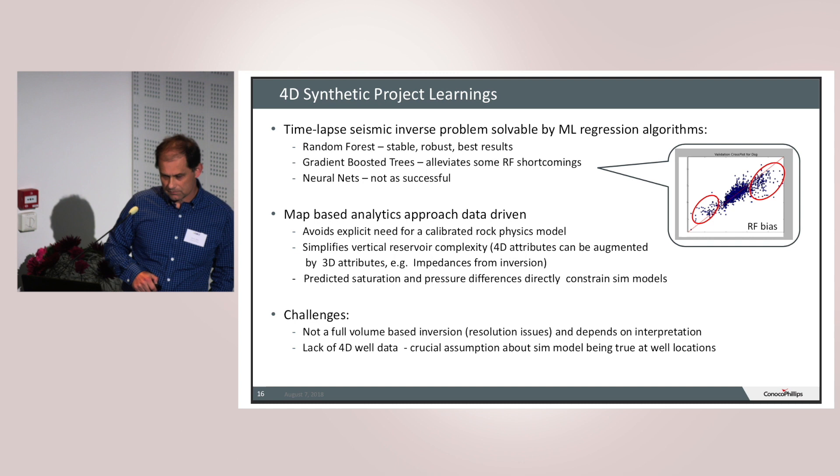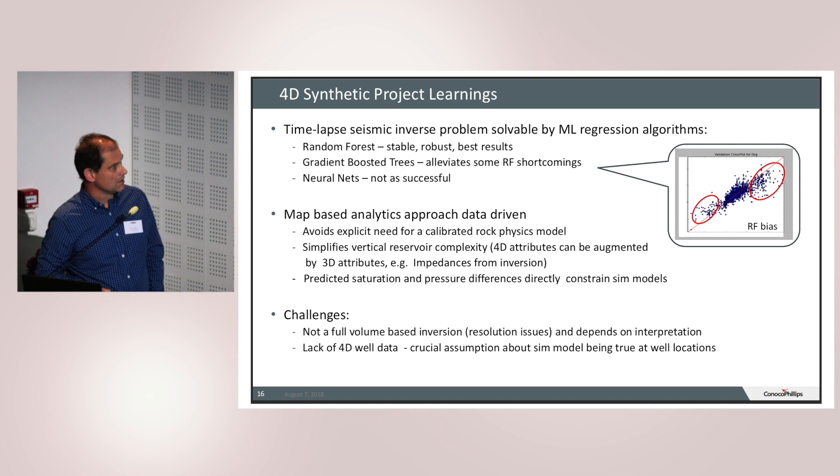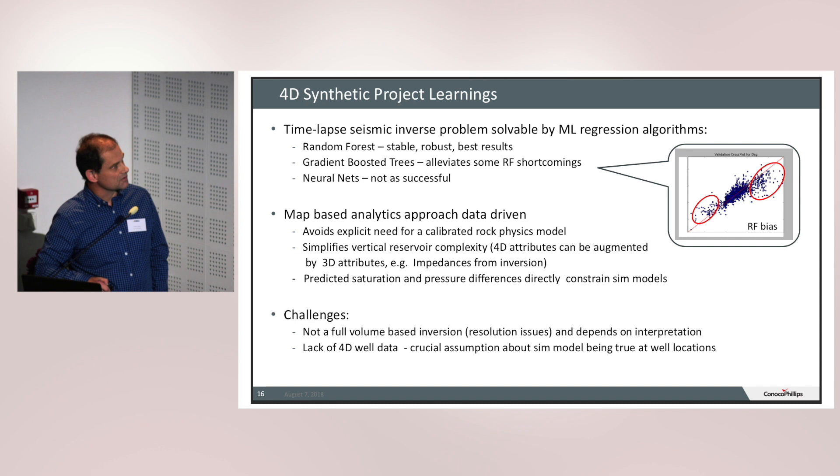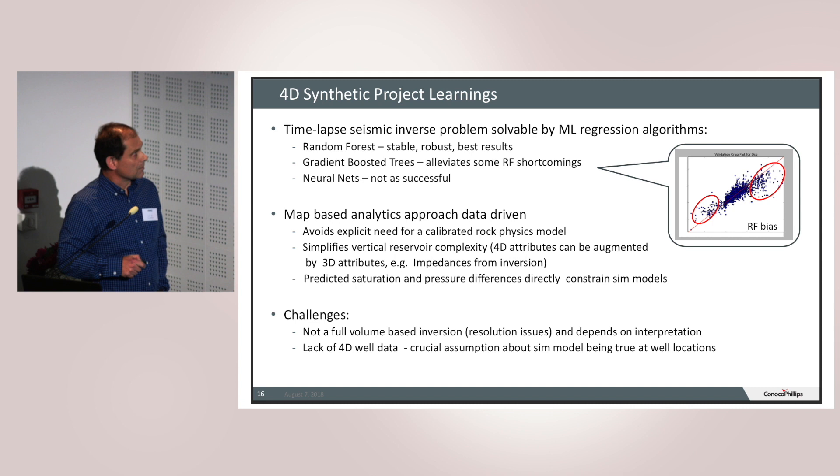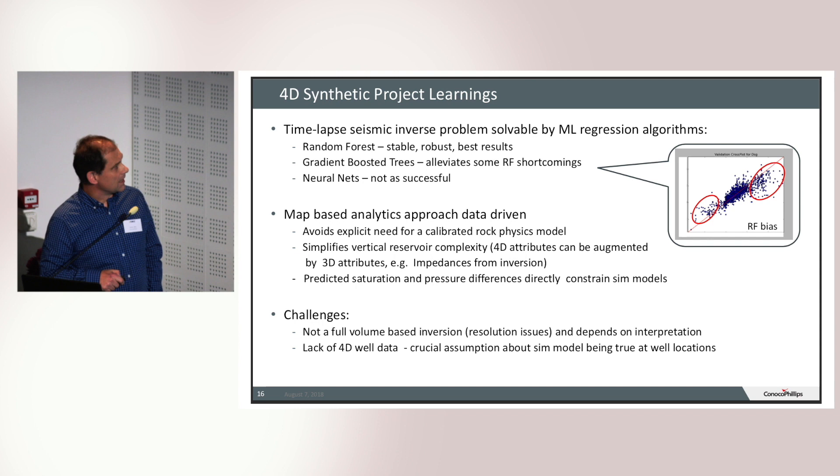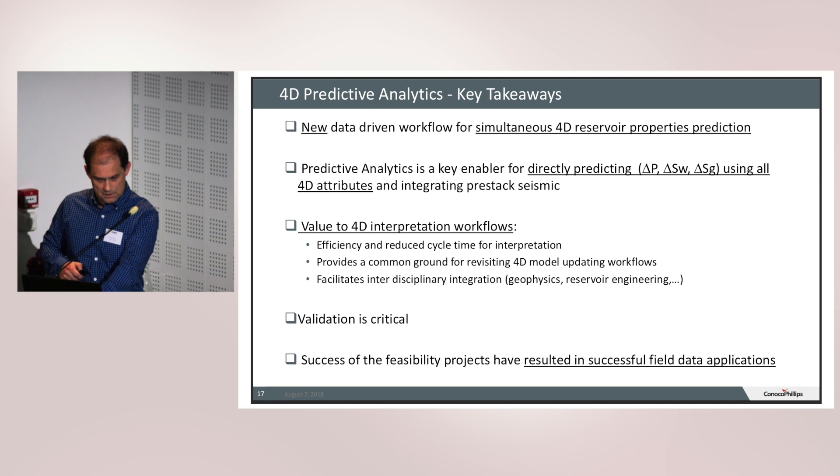What were the learnings? We tested several algorithms. Random forest was the most stable, even though systematically we were observing issues with over-predicting on the lower end and under-predicting on the higher end, which introduced a bias. Those are the regions where you are most interested in the changes, the biggest and the smallest changes. But some of the issues can be alleviated by adopting gradient-boosted trees, for instance. The benefit is that we totally avoid the rock physics inverse transform. There is no rock physics calibration in this approach. A significant benefit that we saw was that we integrated very successfully with the reservoir engineers to update the simulation models.